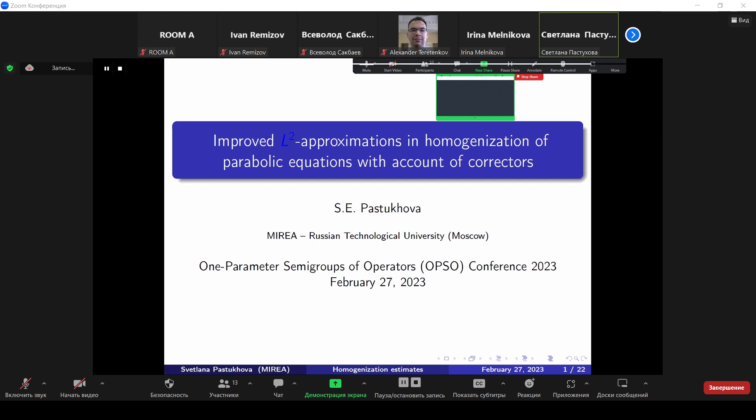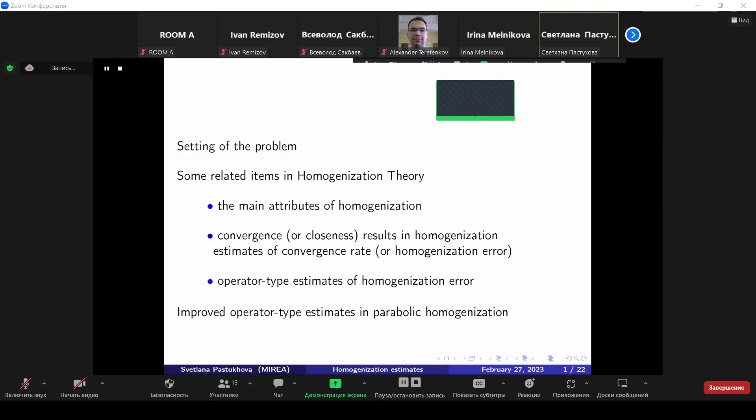I will speak about homogenization and more precisely about parabolic homogenization. When we speak about parabolic equations, they naturally arise operator exponentials and semigroups. So in the talk, we will mention often these exponentials and semigroups. According to our plan, I will set the problem and discuss items in homogenization theory related to it. I must say that the large part of my talk is some overview, which prepares the listeners for the main results.